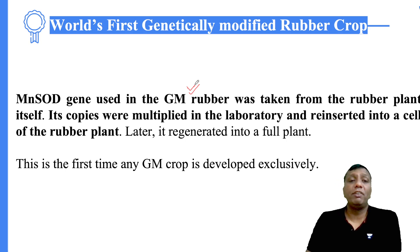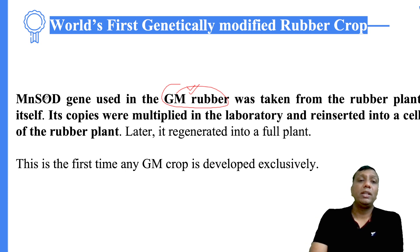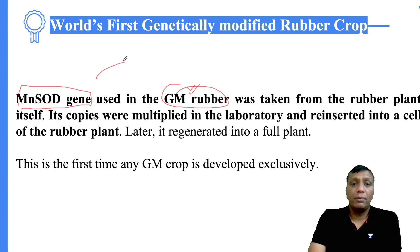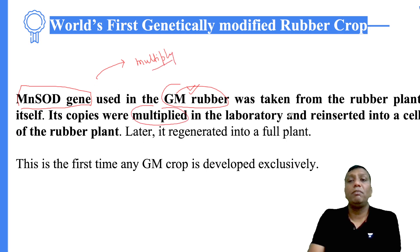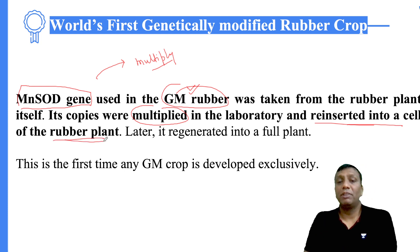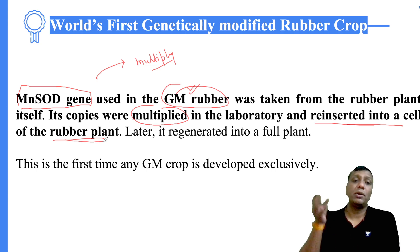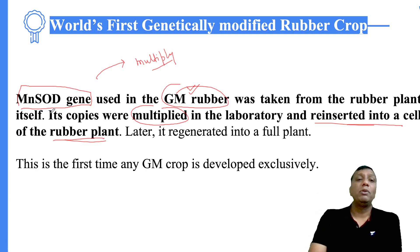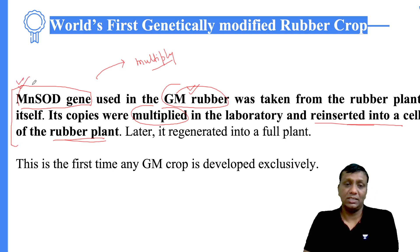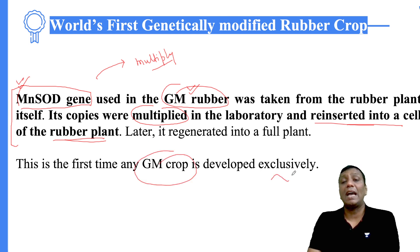The MnSOD gene is used in the GM rubber crop by multiplying copies of this gene and reinserting them into the cells of rubber plants. By multiplying the MnSOD gene and reinserting it into the rubber plant, we increase the MnSOD enzyme formation, which keeps the plant safe against severe winters and stress conditions. This is the first time any GM crop has been developed exclusively as a GM rubber crop.